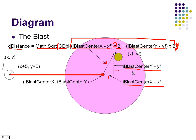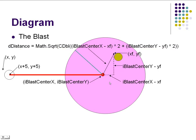Now we have the distance. Our next job is comparing it to the blast radius, which is 50. We do that in an if statement: if the distance is less than 50, it's been hit; if that distance is greater than 50, it's a miss. That's simple — it's just an if statement.